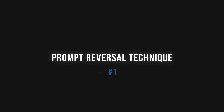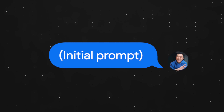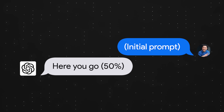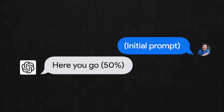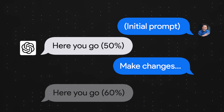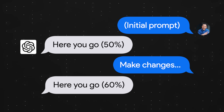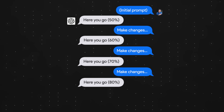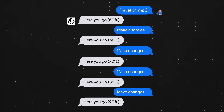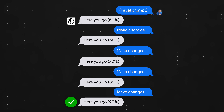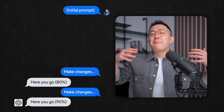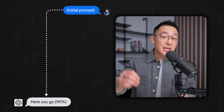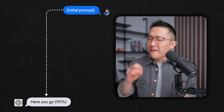Diving right in, we have the prompt reversal technique for ChatGPT. You know that back and forth we all have with AI? After that initial prompt, we get a first result that's maybe 50% of what we want, so we ask for some changes. The second result gets us to 60%, and this goes on and on until we finally land on something that's about 90% of what we wanted. What if we could skip all that back and forth and just jump straight to the near perfect result every single time? That's what prompt reversal does.